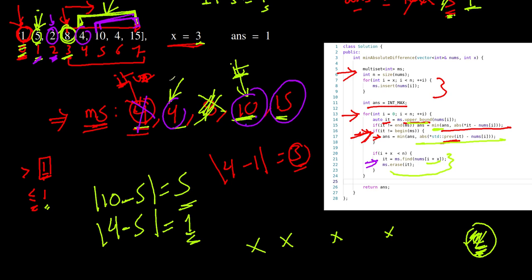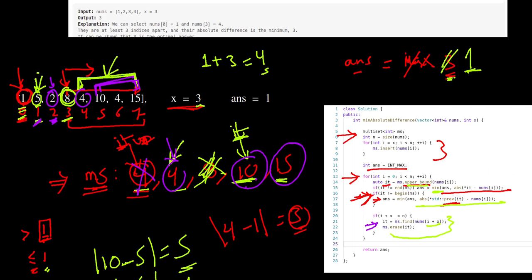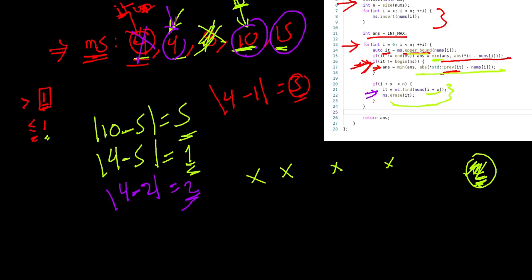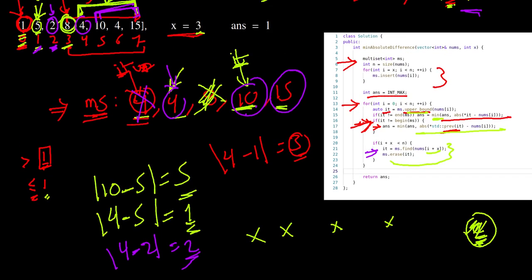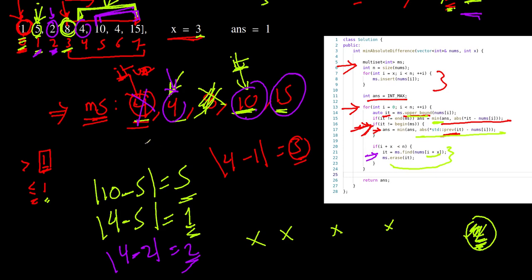We find the first element greater than 2, which is 4. So 4 minus 2 equals 2, which is greater than the current answer of 1, so the answer stays at 1. For the element less than 2, we check the previous of the iterator, but since this pointer is at the beginning of the multiset, this condition does not apply.